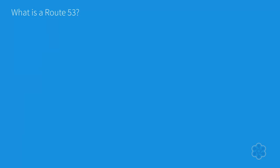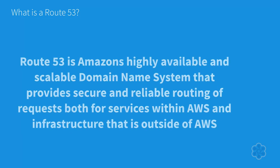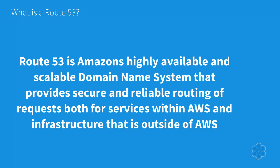What is Route 53? Route 53 is Amazon's highly available and scalable domain name system that provides secure and reliable routing of requests both for services within AWS and infrastructure that is outside of AWS. Route 53 is able to provide this service through its global network of authoritative DNS servers that reduce latency and can be managed via the management console or API.